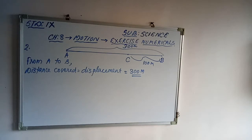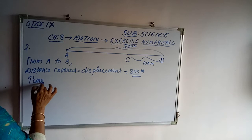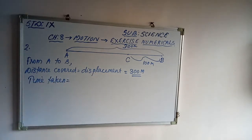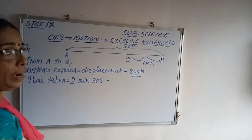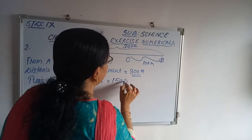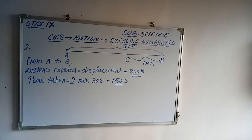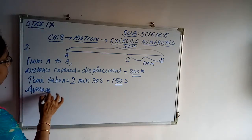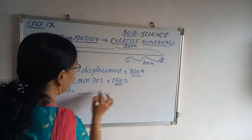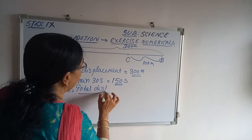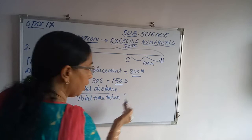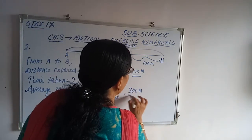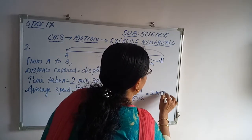Average speed is equal to total distance upon total time taken. Total distance is 300 meters, total time taken is 150 seconds. That equals 2 meters per second. This is the average speed from A to B.